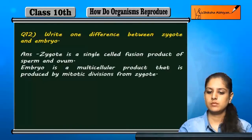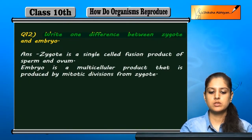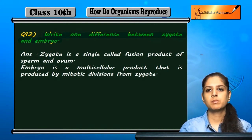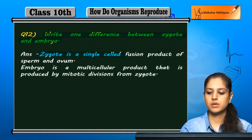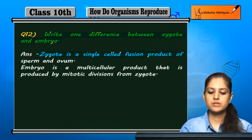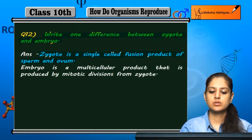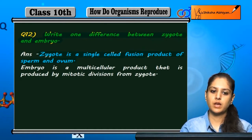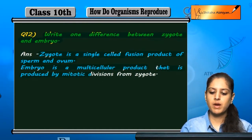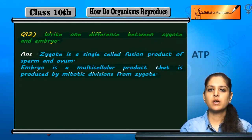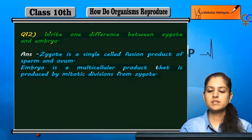Question number 12: write one difference between zygote and embryo. An embryo is a multi-cellular product that is produced by mitotic divisions from a zygote. The zygote divides mitotically to produce a multi-cellular organism, which is the embryo.